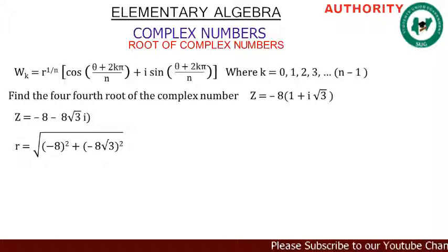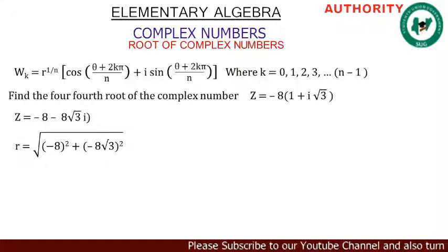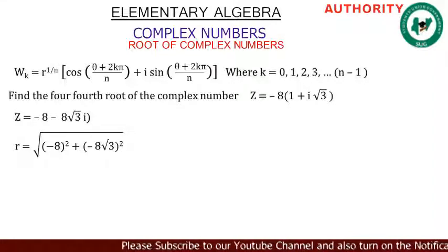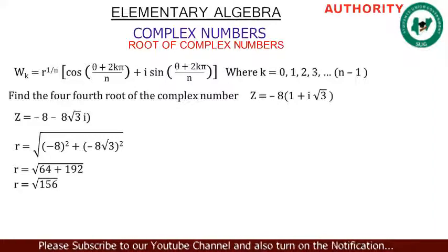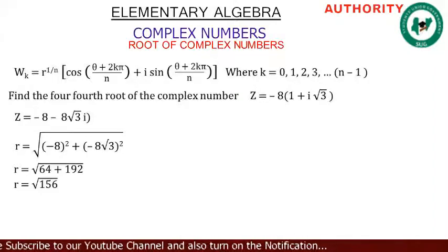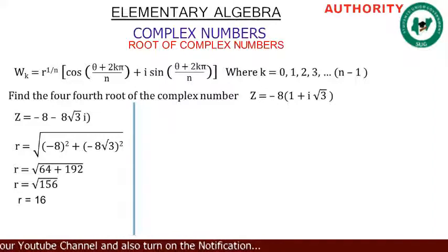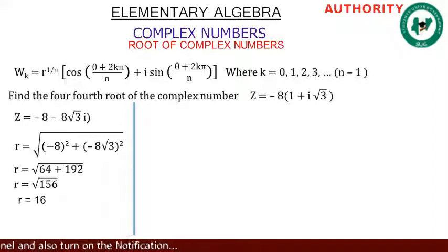Let's start with r. r = √[ (-8)² + (-8√3)² ]. So -8 squared gives 64, and (-8√3) squared gives 192. Then 64 + 192 = 256, and √256 = 16. So r = 16.